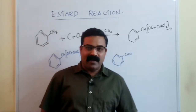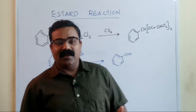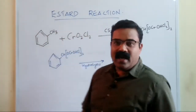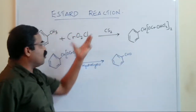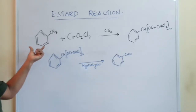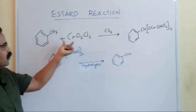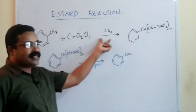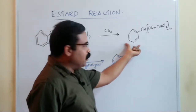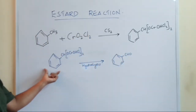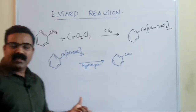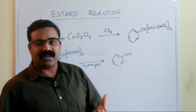Hello friends, welcome to chemistry class from my exam coaching. Today we are going to learn a very important reaction in organic chemistry — that is the Étard reaction. I have already written what is an Étard reaction on the board, you can see. An Étard reaction is when toluene reacts with chromium chloride in the presence of carbon disulfide. A chromium complex is produced, and on hydrolysis of that chromium complex we get benzaldehyde. This reaction is called the Étard reaction.